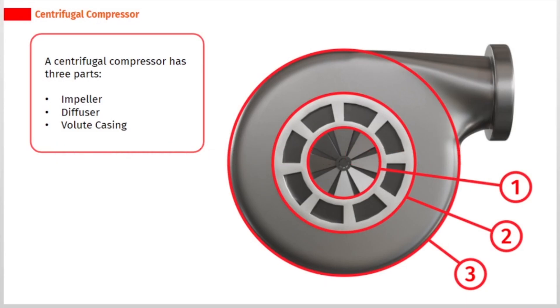A centrifugal compressor has three parts: impeller, diffuser, and volute casing.